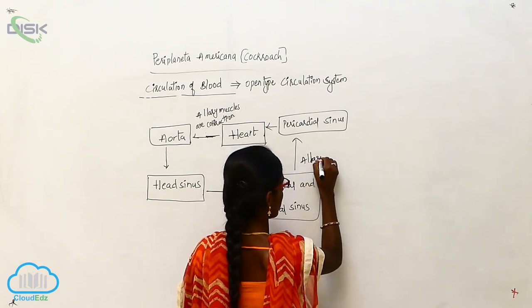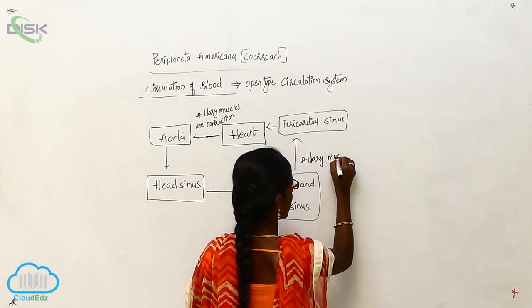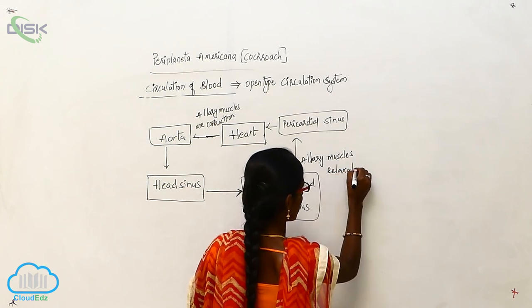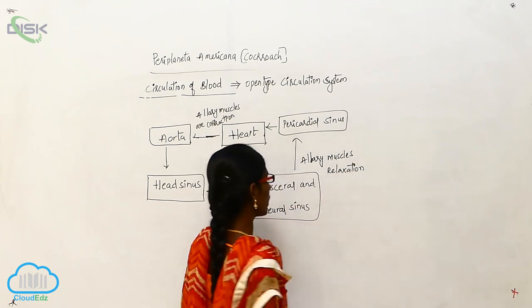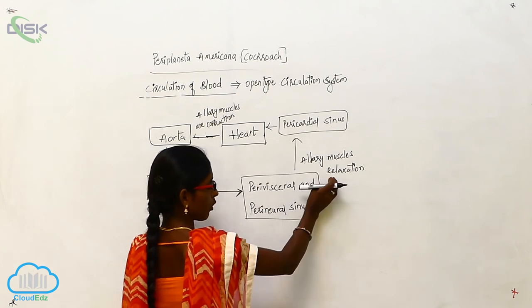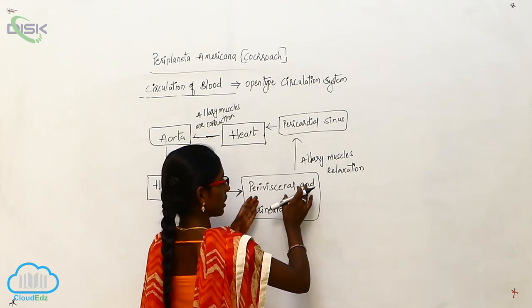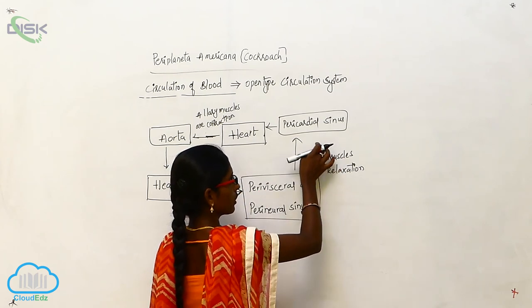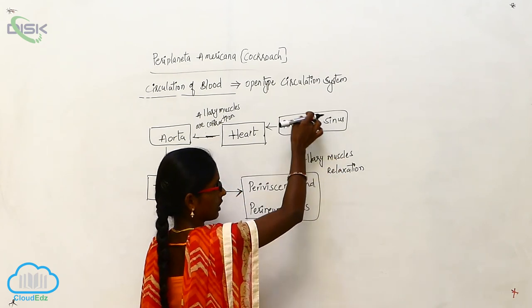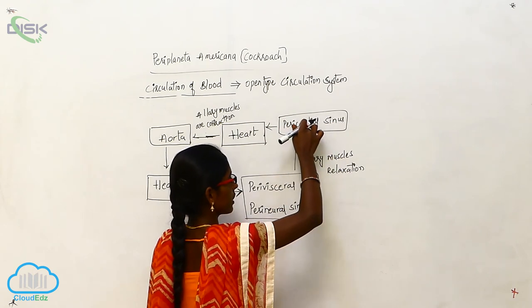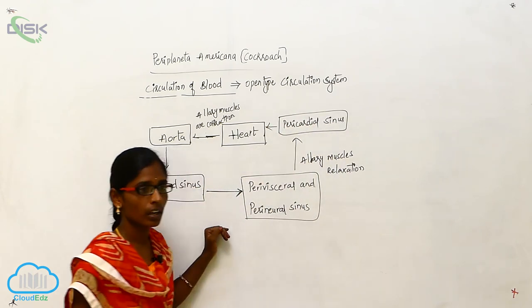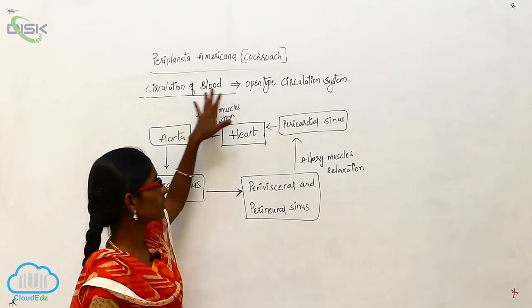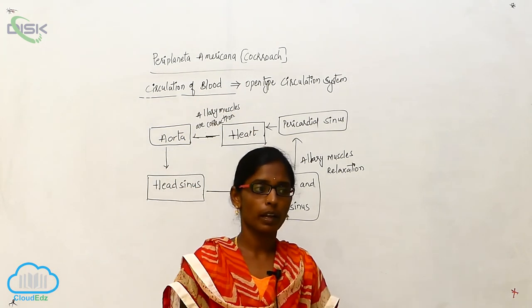Here, alary muscles undergo relaxation. Because of that, the perivisceral sinus will be pulled down, and the blood goes to the pericardial sinus. From the pericardial sinus, it will go back to the heart. This is the mechanism involved in the circulation of Periplaneta.